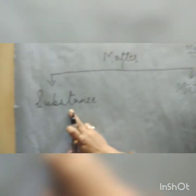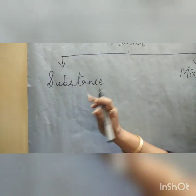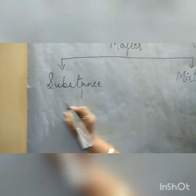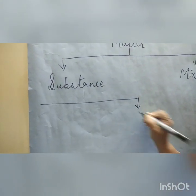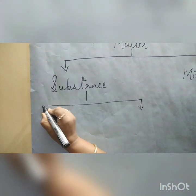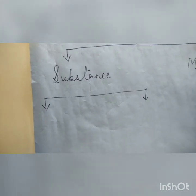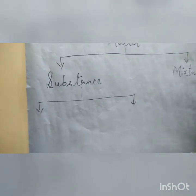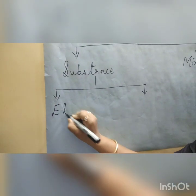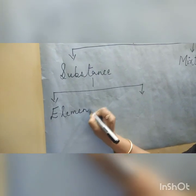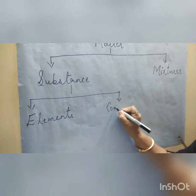Substances are further divided into two types. What are the two types of substances? Number one, elements, and number two, compounds.